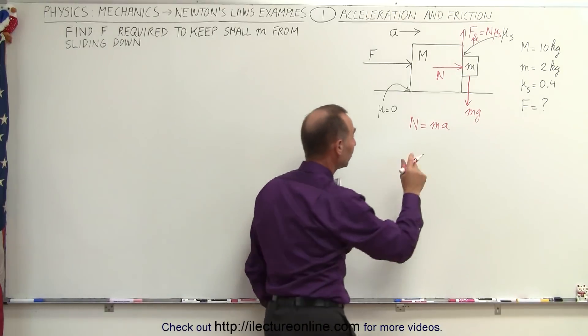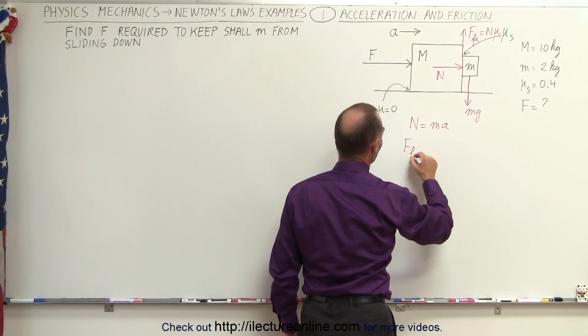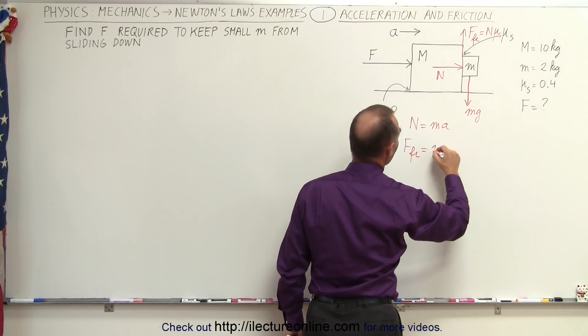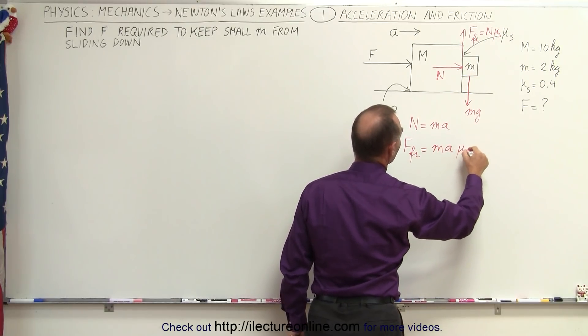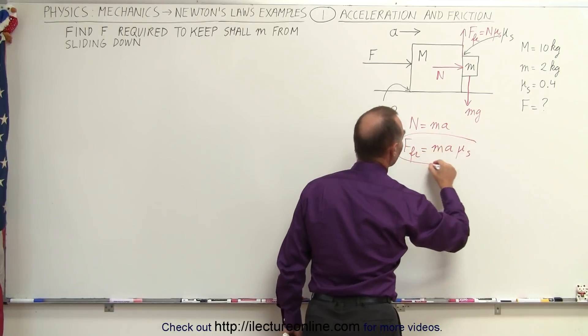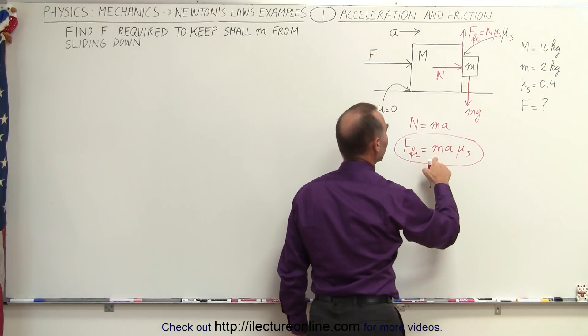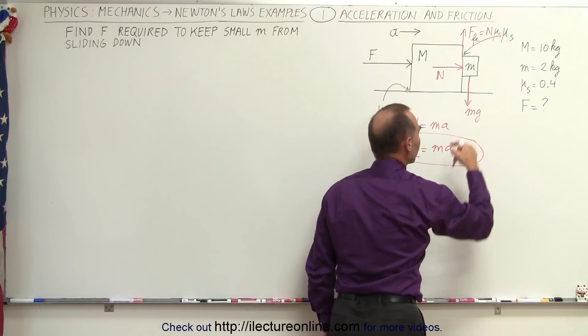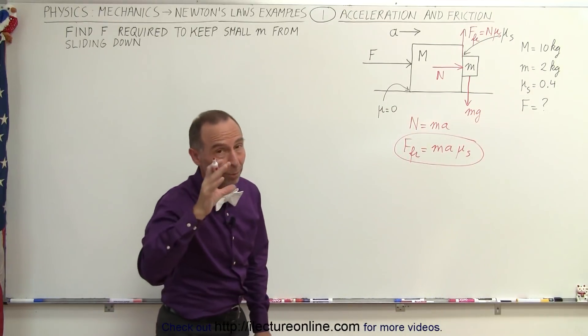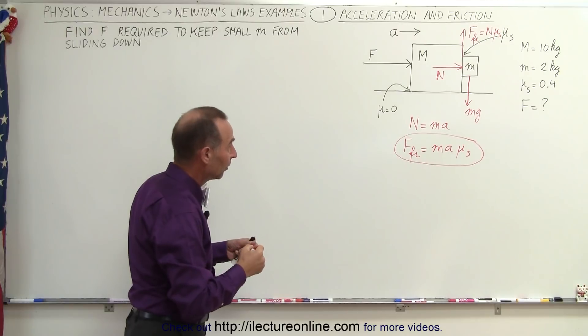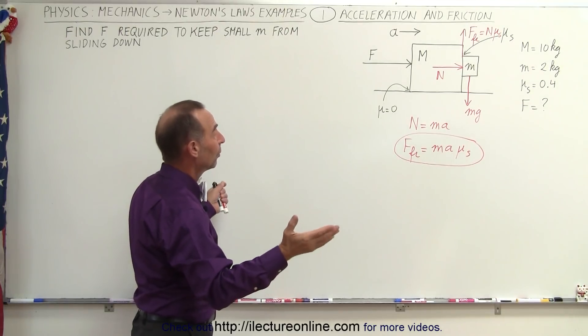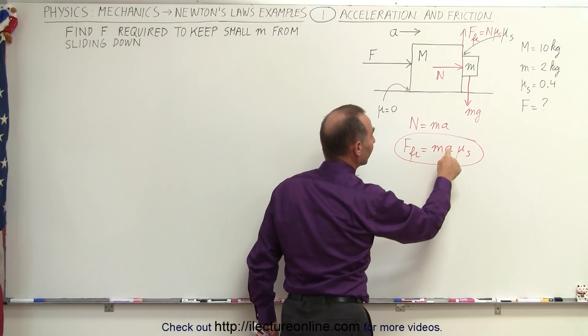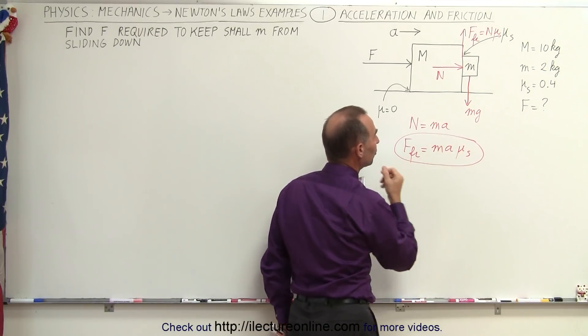And so now we can say, because of that, the friction force, which is equal to the normal force times mu, is now going to be mass times acceleration times mu. And so now that we have the friction force, we realize that this must be sufficiently large to equal the force due to gravity. Once it is, the block will not slide down. So what we need to know now is, what is that friction force going to be equal to? It's going to be the mass of the block times acceleration times mu sub s.